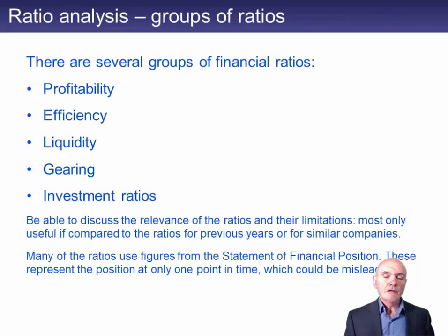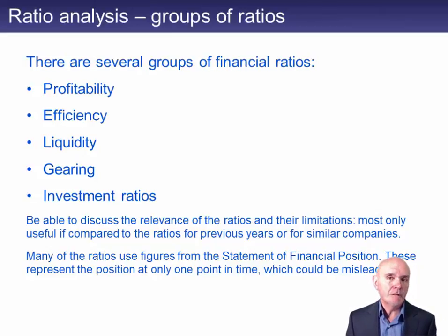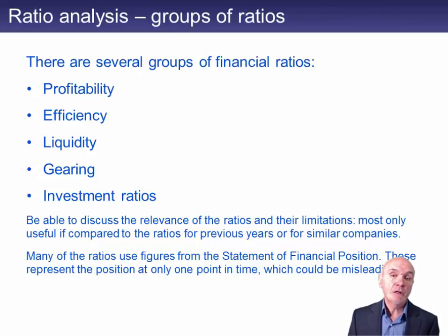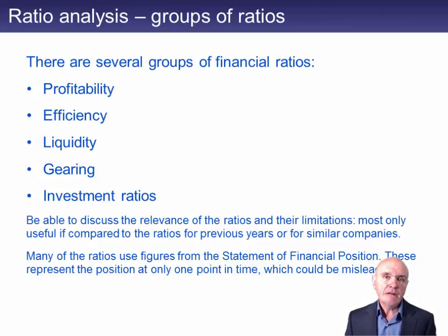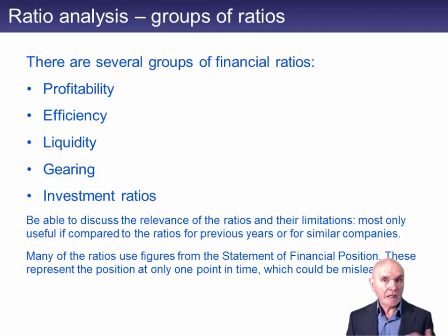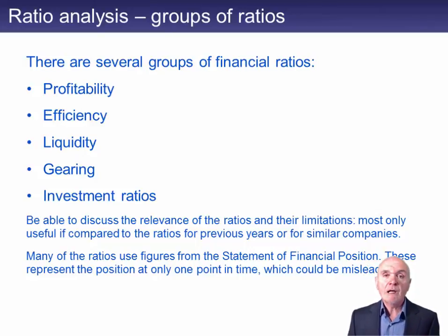The final chapter deals with ratio analysis, something which you should have done many times before. It would have come into F3 and F8 in terms of analytical procedures. But nevertheless, it's important in planning. It allows you to decide how either your company or perhaps a target company is doing. So we'll go through it really quite quickly.